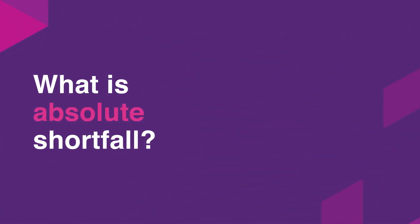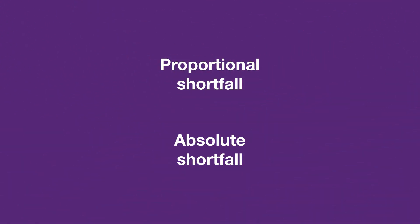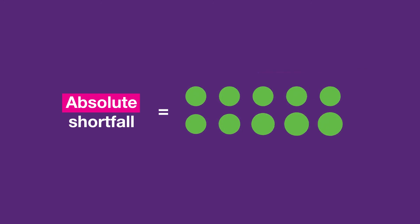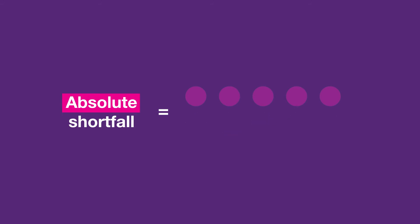What is absolute shortfall? The second measure NICE will consider when deciding whether to apply the severity modifier is absolute shortfall. This measures the severity of the disease by considering QALYs lost, but it does so in an absolute way. It gives a positive number that is not bound between 0 and 1. If we look at a simple example, we can see the absolute shortfall is just the number of QALYs the person with the disease loses. So if they lose 5 QALYs, the absolute shortfall is 5. If they lose more QALYs, the absolute shortfall number increases.